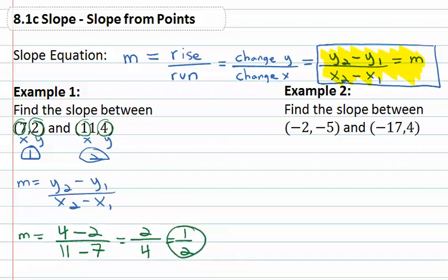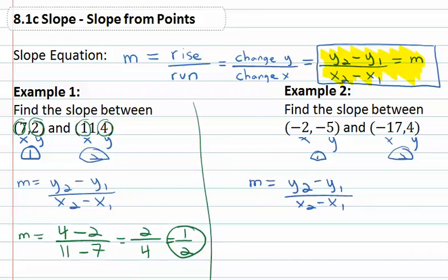Let's try a second example. In this second example, we're asked to find the slope between negative two, negative five, and negative seventeen, four. Again, they come in x, y pairs. We've got our first point and our second point, and slope is equal to this important formula, y two minus y one over x two minus x one. Plugging it in.